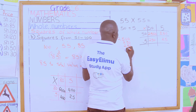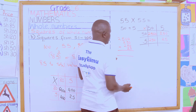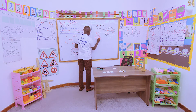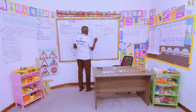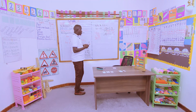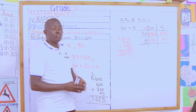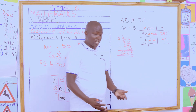Now bring all answers together by addition: 2500 plus 250 plus 250 plus 25. Adding: 0+0+0+5 = 5; 0+5+5+2 = 12, write 2 carry 1; 1+5+2+2 = 10, write 0 carry 1; then regroup to get 3. So the square of 55 is 3025.